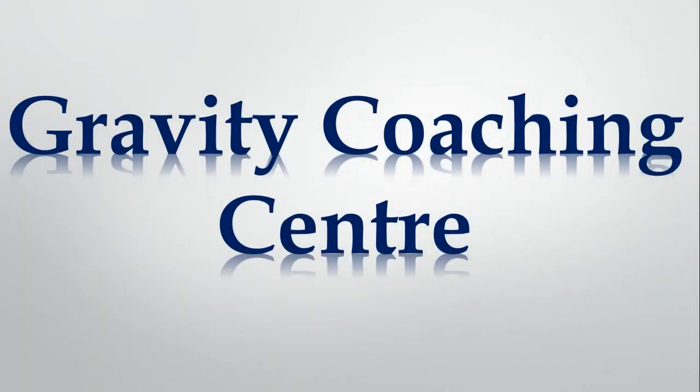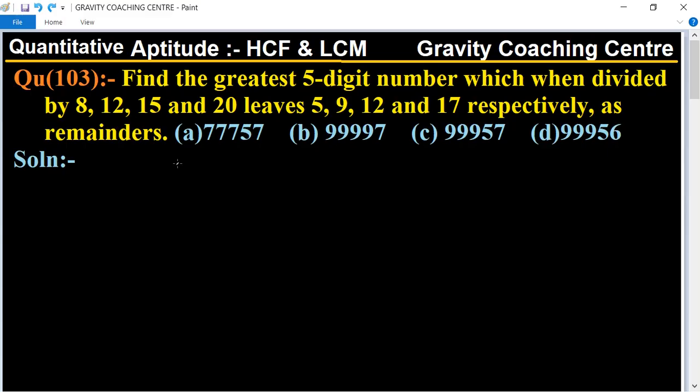Welcome to our channel, Gravity Coaching Centre, quantitative aptitude chapter HCF and LCM. Question number 103: Find the greatest 5-digit number which when divided by 8, 12, 15, and 20 leaves 5, 9, 12, and 17 respectively as remainders.